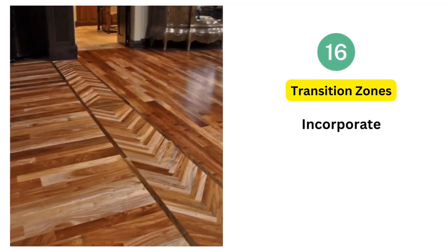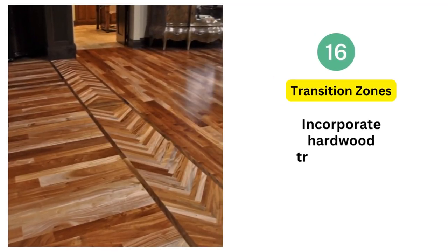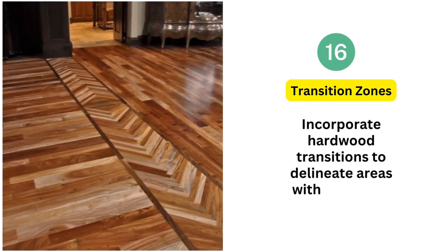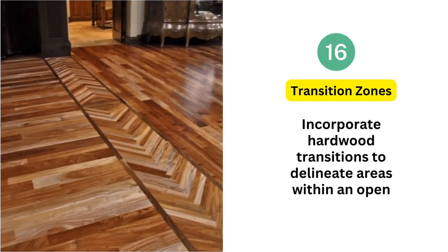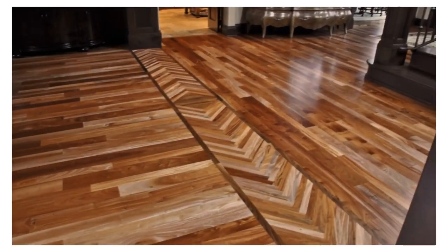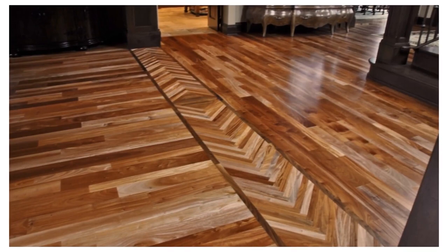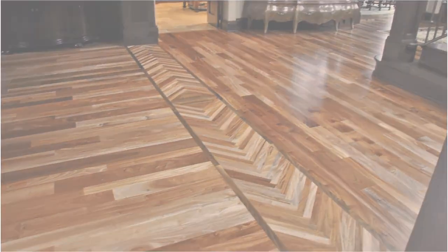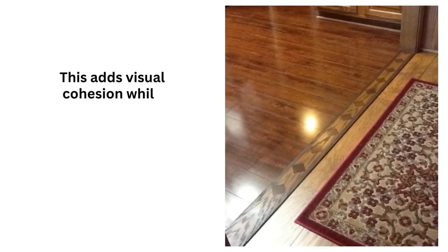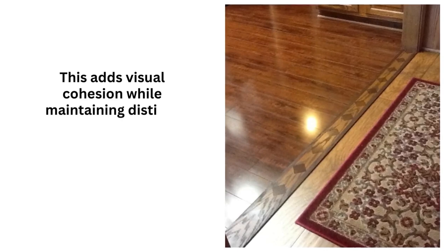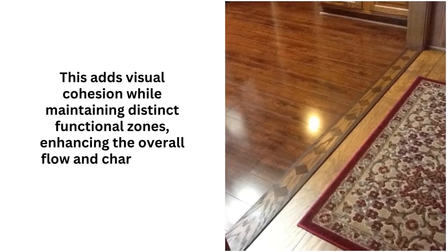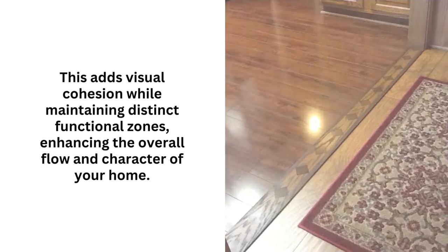16. Transition Zones: Incorporate hardwood transitions to delineate areas within an open layout. Seamlessly shift from a living space to a dining area with varying wood patterns. This adds visual cohesion while maintaining distinct functional zones, enhancing the overall flow and character of your home.